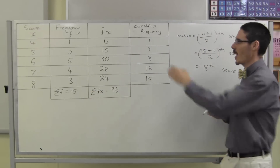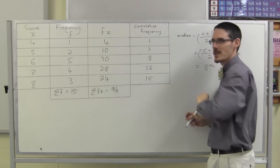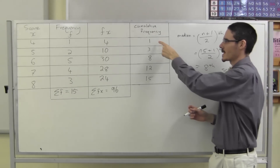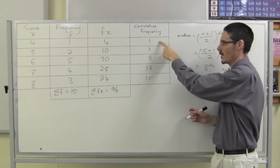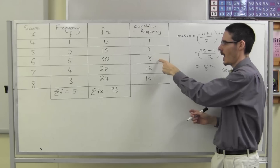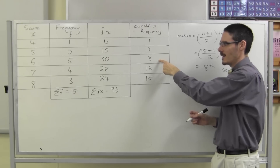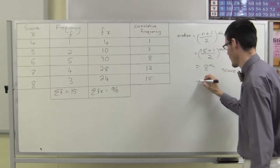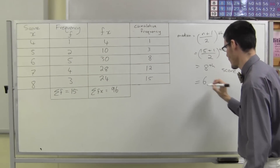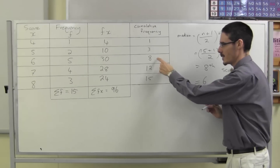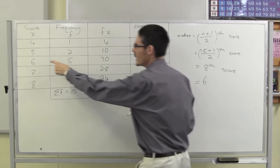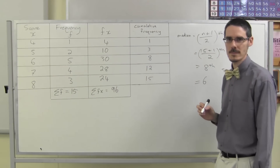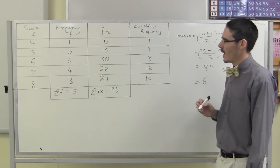If I was going in sorted order and I wanted to find the 8th score — have I seen it yet? No. Have I seen it yet? No. The 8th score is 6.